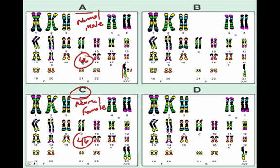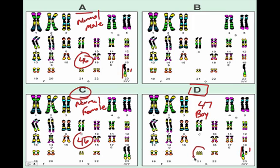So at least B and D remain. Which one of these has 47 chromosomes? Hopefully you chose D. D has 47 chromosomes. Is it a boy or a girl? If you look down here, it is a boy — and it's actually a boy with Down syndrome, or trisomy 21.